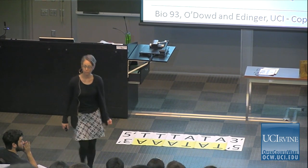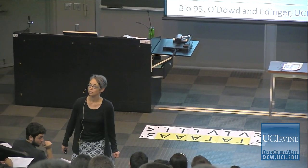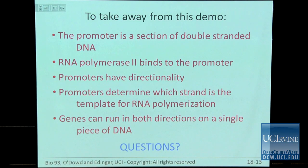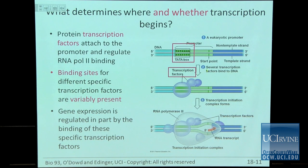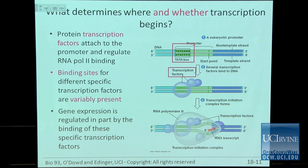Student question: what about the AUG? The AUG is the start of translation, but the start of transcription is upstream — 5 prime of that AUG. There's a stretch of untranslated RNA between the transcriptional start site and the AUG. So the AUG is downstream of the transcriptional start site. When we say downstream, we mean 3 prime from that same stream.